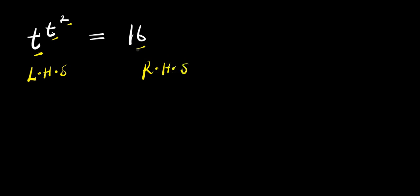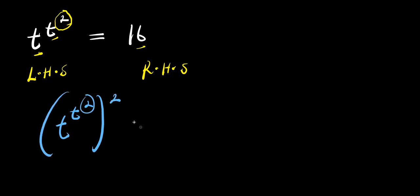To solve, we start by multiplying each of these exponents by power 2. Why? Because we have 2 here. Whenever you have a number here, you can solve this type of problem by multiplying each of the exponents by the same number. So we are going to have t to the power of t to the power of 2, raised to the power of 2, and this equals 16 to the power of 2.